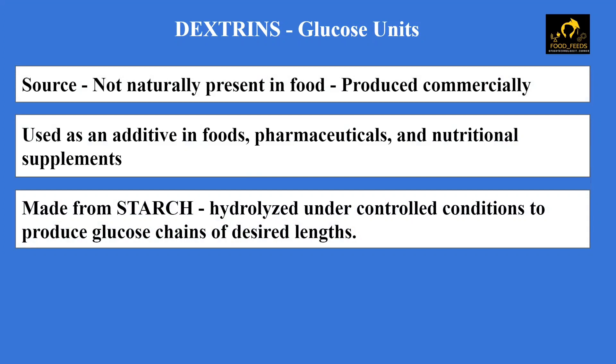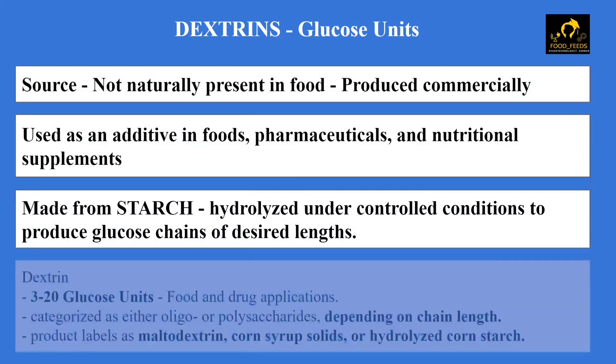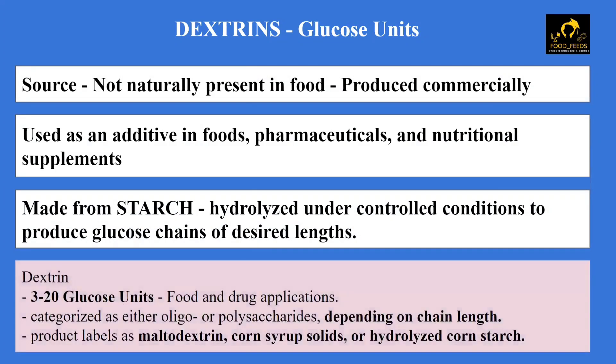Based on the length of the dextrin, the application varies. For example, in the food and drug industry, 3 to 20 sugar units of dextrin are used — which is one reason why dextrin can be categorized as either an oligosaccharide or a polysaccharide depending on chain length. Dextrins are also listed on product labels as maltodextrin, corn syrup solids, or hydrolyzed corn starch.